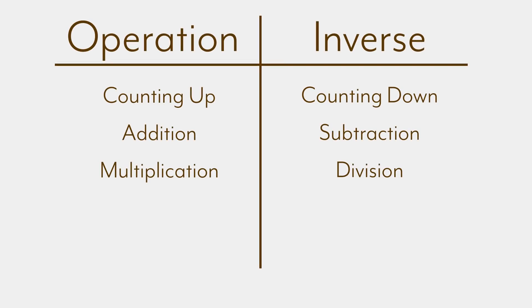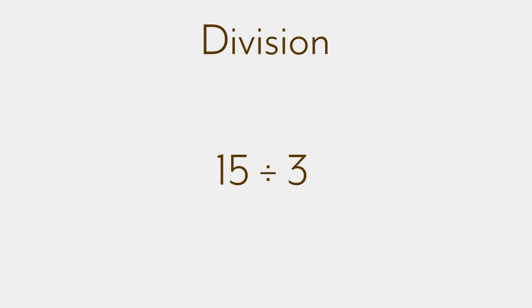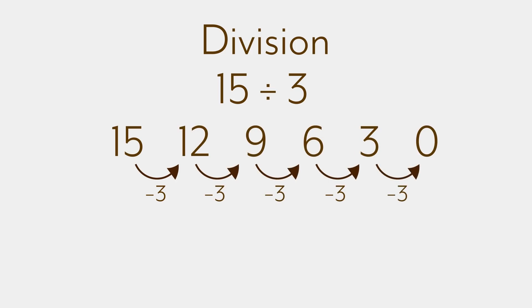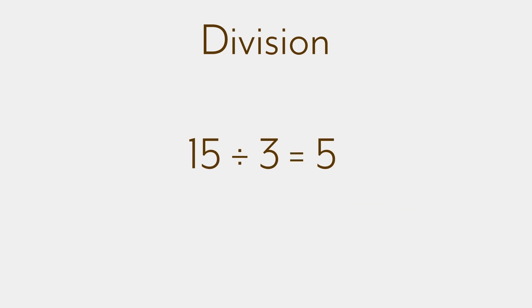The next operation we need to flip is multiplication. Its inverse is division, which has some interesting issues. Take 15 divided by 3. If we are right, we should be able to find repeated subtraction packed in this — start at 15 and keep subtracting away 3s. So we get 15, 12, 9, 6, 3, and 0. That's 5 threes we took away, so the answer we get with repeated subtraction is 5. This sure looks like the opposite of multiplication: 3 times 5 is 15. So we got the right answer.